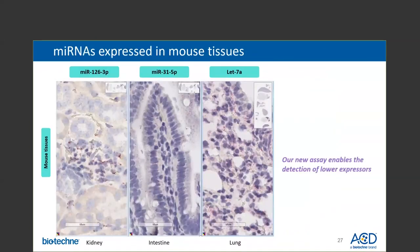Last but not least, visual detection of microRNAs can be very challenging due to lower levels of expression. Our assay has successfully demonstrated the specific detection of lower expressors. Here are examples of some lower microRNA expressors: detection of microRNA-124 in mouse kidney, microRNA-31 in mouse intestines, and let-7a in mouse lungs, using our new assay.